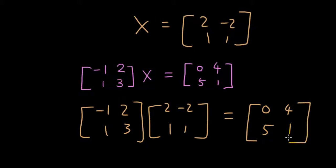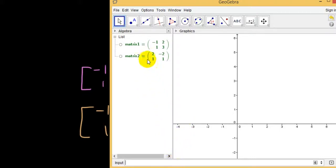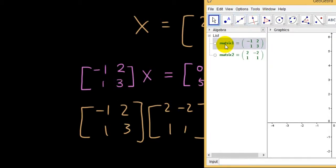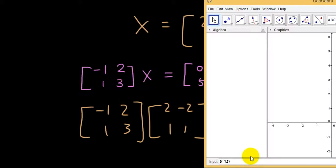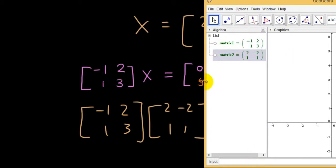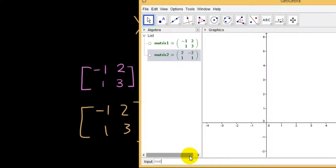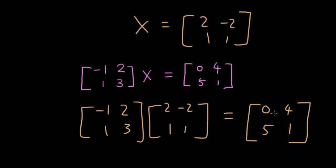I'm going to use GeoGebra to help me do that. So I'm going to enter the matrices into GeoGebra. I'll show you guys how to do it: braces, negative one, two, comma, in the second brace one, three — that creates the first matrix. The second matrix: two, comma, negative two, inside the second brace one, one. Those are my two matrices. Now let's multiply them together — matrix one times matrix two — and I get matrix three, which is zero, four, five, one, which is the answer. So I've successfully solved for x using Gaussian elimination.